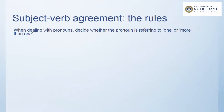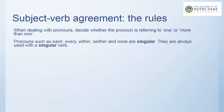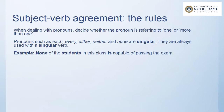When dealing with pronouns, you should decide whether the pronoun is referring to one or more than one. Pronouns such as each, every, either, neither, and none are singular — they are always used with a singular verb. For example: 'none of the students in this class is capable of passing the exam.' Because 'none' is a singular pronoun, we use the singular verb 'is,' even though 'students' might suggest 'are.'